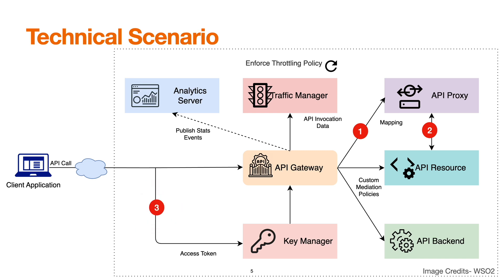Then it goes through the token validation process. For a JWT-based token, the Gateway validates the token itself. For a third-party key manager, it goes to the key manager. Post token validation, the request is then forwarded to the traffic manager where the throttling policy is enforced. It then checks for mediation sequences, whether a policy is applied on a particular resource through in and out sequences.